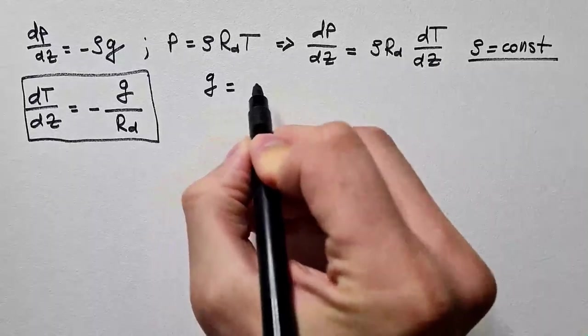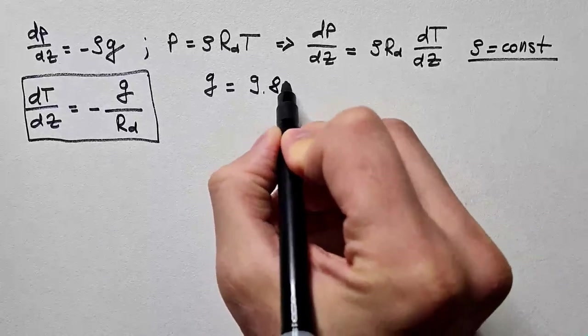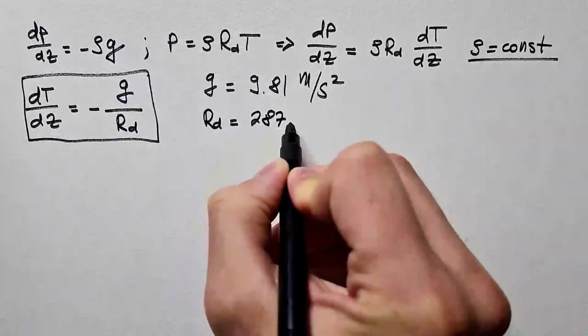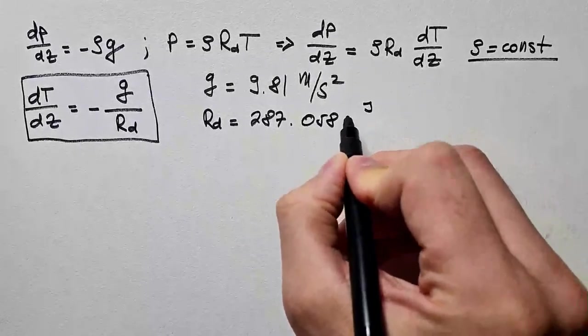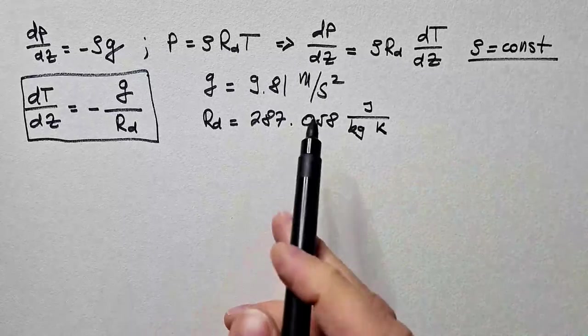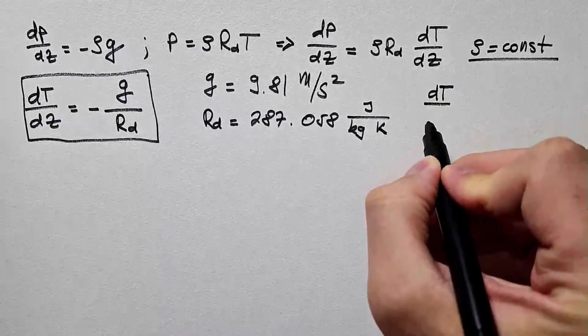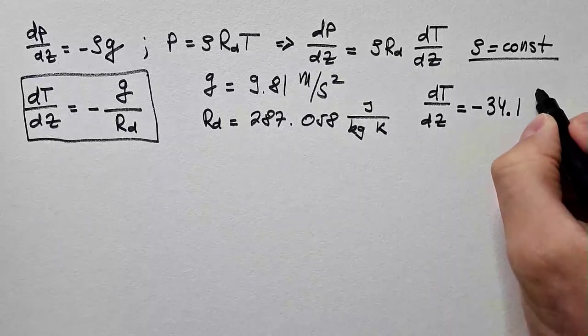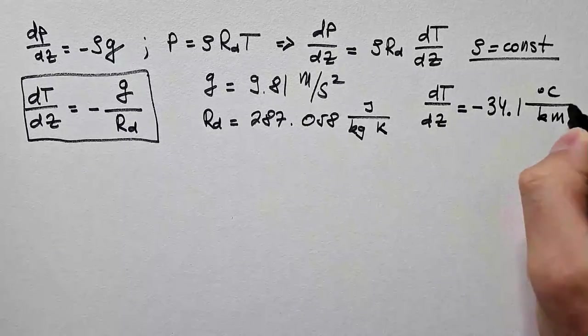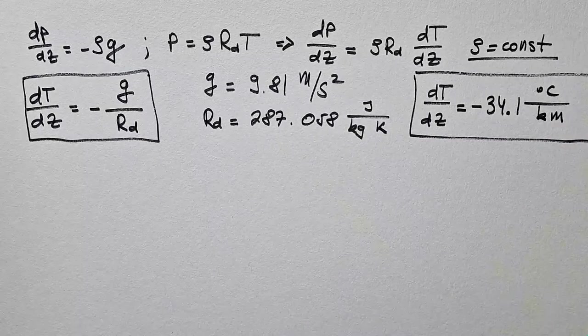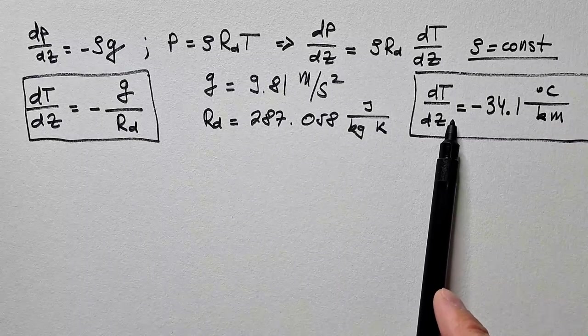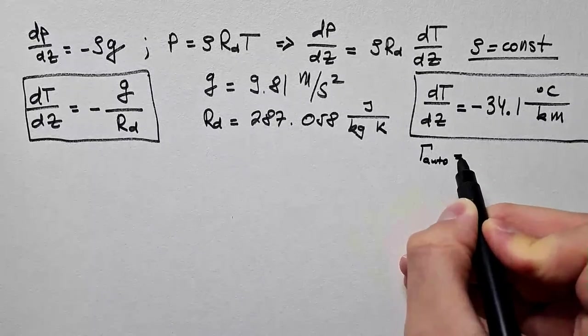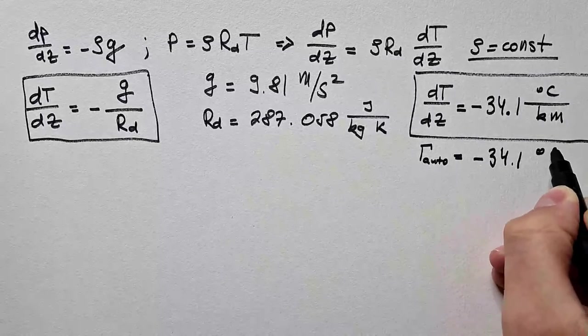Kindly remember that the value of g in our atmosphere is 9.81 meters per second squared and Rd is 287.058 joule per kilogram per kelvin. So if we plug in these values we will see that dT/dz = -34.1 degrees Celsius per kilometer, not meter, kilometer. Furthermore, we call this temperature gradient autoconvective lapse rate, γ_auto = -34.1 degrees Celsius per kilometer.